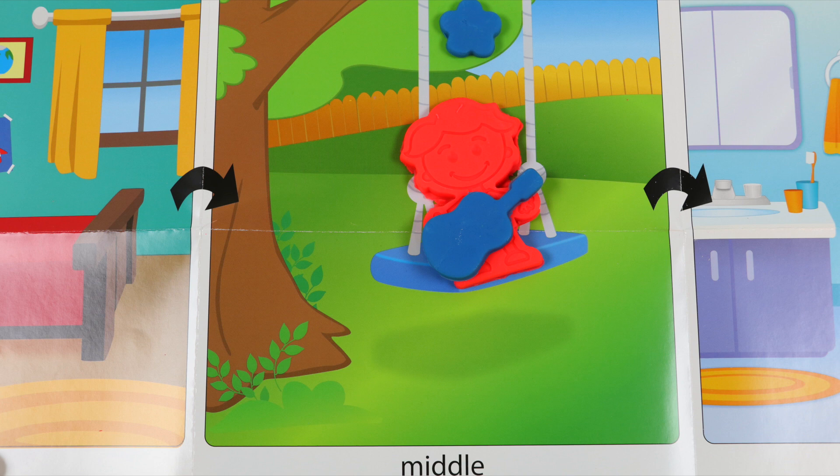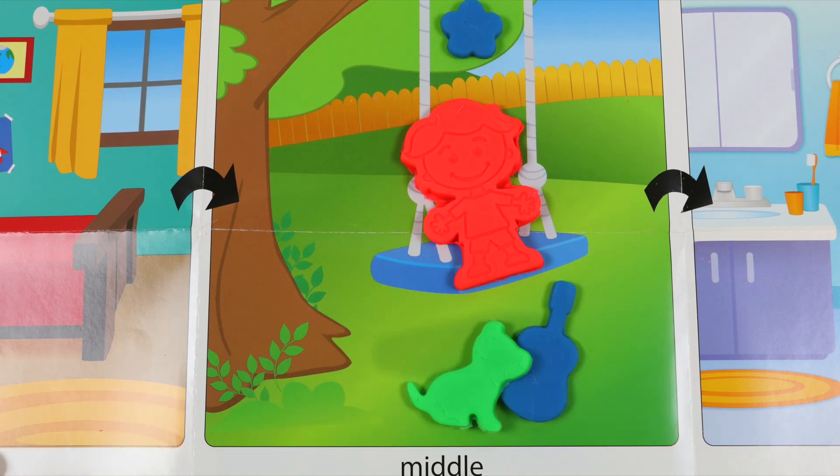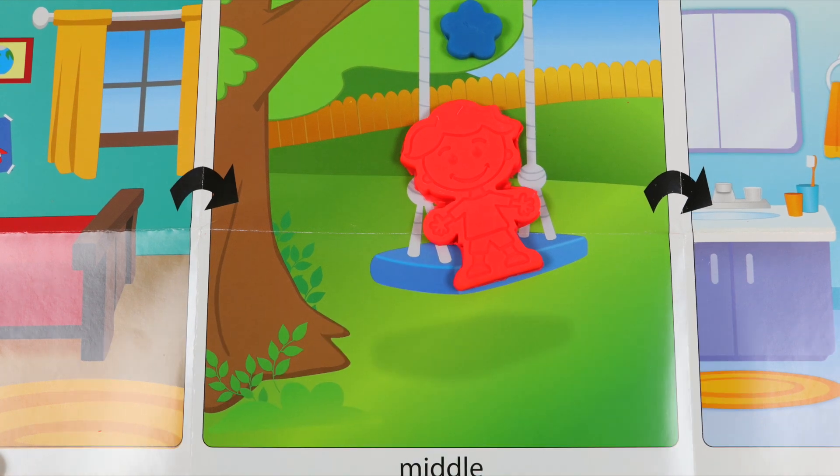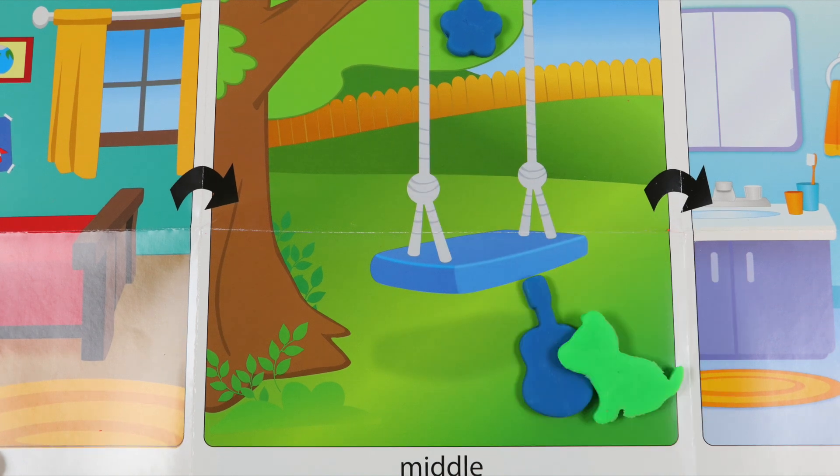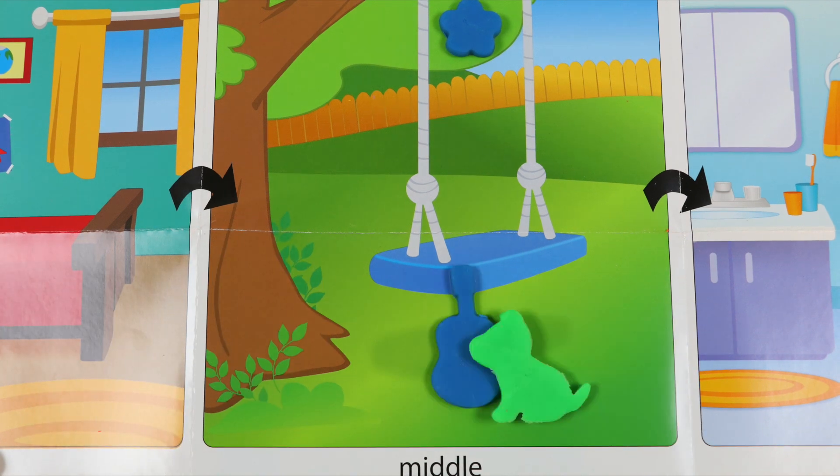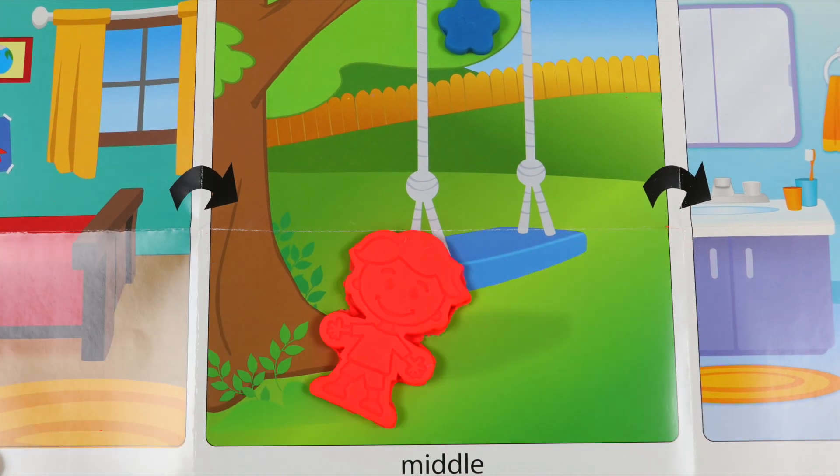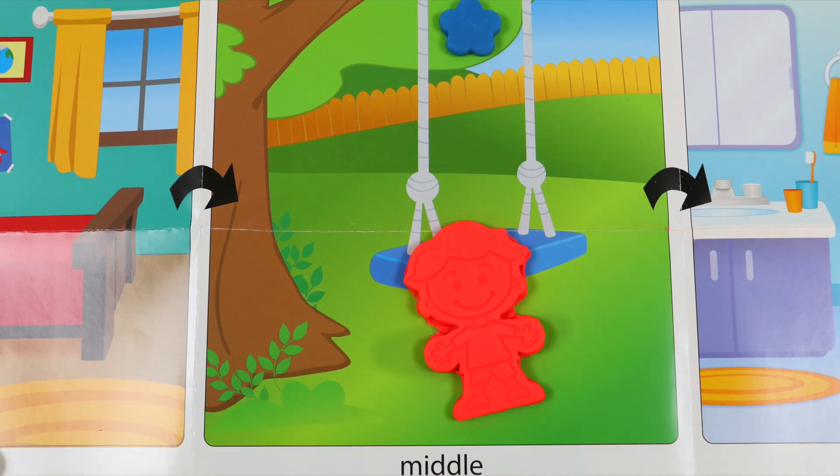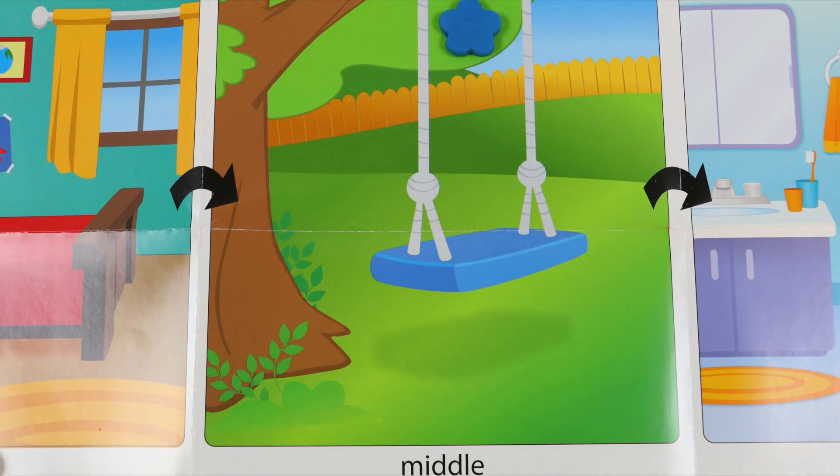When all of a sudden, his green dog Bam Bam came running up to him and snatched his guitar. Bam Bam ran into the house with the guitar in his mouth and Jack jumped off the wings and started chasing him. Bam Bam was too fast and went into the house from the other side. Jack was huffing and puffing, chasing Bam Bam and calling out his name. Bam Bam, stop! Finally, after a long chase, Jack caught Bam Bam and was able to get his guitar back.